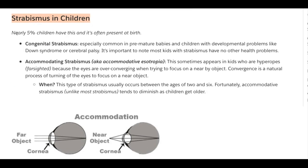Strabismus in children: nearly 5% have this condition, and it's often present at birth — congenital strabismus. It is especially common in premature babies and children with developmental problems like Down syndrome or cerebral palsy. It's important to note that most kids with strabismus have no other health problems.